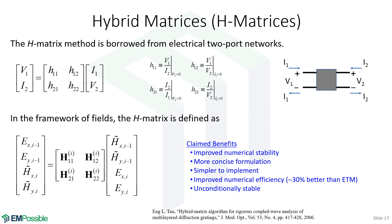Hybrid matrices come from network theory and electrical engineering. I have not implemented these, but reading the paper the claimed benefits are: improved numerical stability, a more concise formulation, simpler implementation, improved numerical efficiency, and unconditional stability. I can see them being faster since scattering matrices are slower, but I cannot verify the other claims. The reference is provided — I'd welcome you to try it and share your experience.